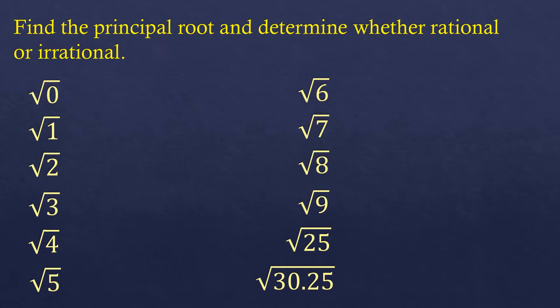Starting with the square root of zero: we're looking for a number that, when multiplied by itself, gives zero. The only such number is zero itself, so zero times zero is zero. This is rational — a number is irrational only when its decimal is non-terminating, meaning it goes on infinitely without stopping.